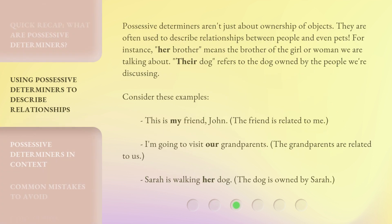Possessive determiners aren't just about ownership of objects. They are often used to describe relationships between people and even pets. For instance, 'her brother' means the brother of the girl or woman we are talking about. 'Their dog' refers to the dog owned by the people we're discussing. Consider these examples: 'This is my friend John' — the friend is related to me. 'I'm going to visit our grandparents' — the grandparents are related to us. 'Sarah is walking her dog' — the dog is owned by Sarah.